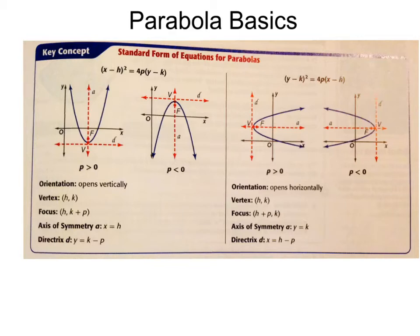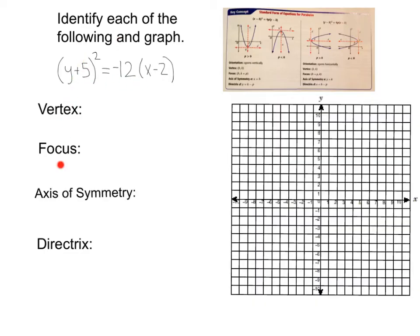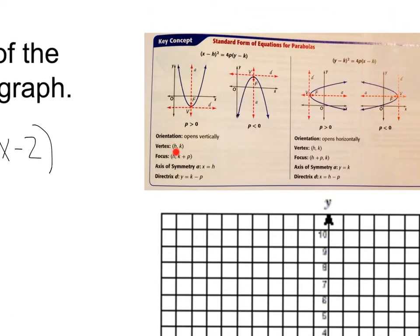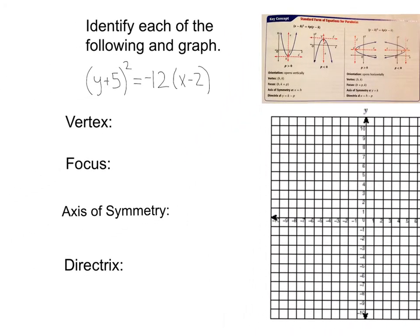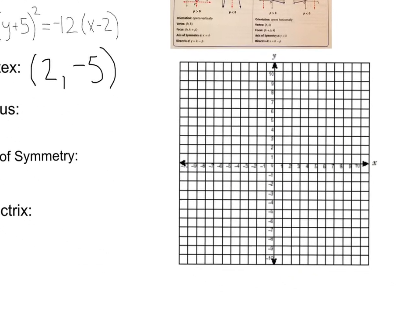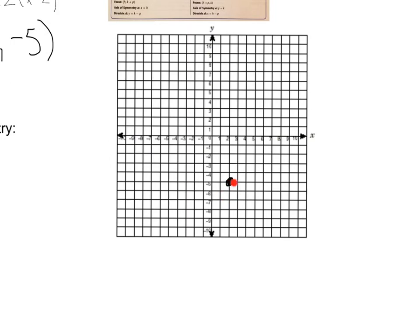All right, that was probably a lot to take in, but let's go ahead and do a couple examples and you'll see how it all pulls together. So here we have an equation of a parabola — we want to identify each of these and then sketch the graph. First, let's find our vertex. Our vertex is always going to be hk, where h is grouped with the x and k is grouped with the y. My h is grouped with my x and it's the opposite, so that's going to be 2 — opposite of negative 2 — and my k is going to be opposite of 5, so negative 5. That gives me my vertex of (2, negative 5).